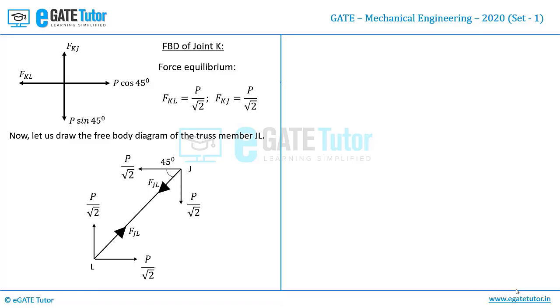Let us consider the joint J first. Since the member FJL also has some force which is being carried because of applied force, which is FJL here. When we consider joint J and its free body diagram this is what we get.